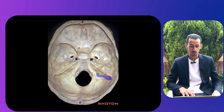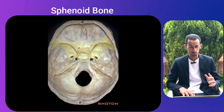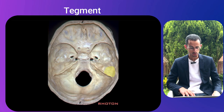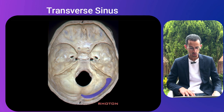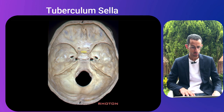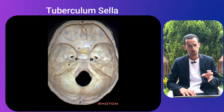Also visible are the sigmoid sinus, the sphenoid bone, the superior orbital fissure, the superior petrosal sinus, the tegmen, the transverse sinus, the trigeminal prominence, and the tuberculum sellae. It is really important to know the bony anatomy from the inside; a separate video with more detail on the foramina and their contents will follow.